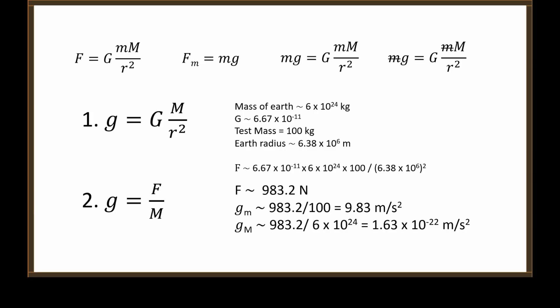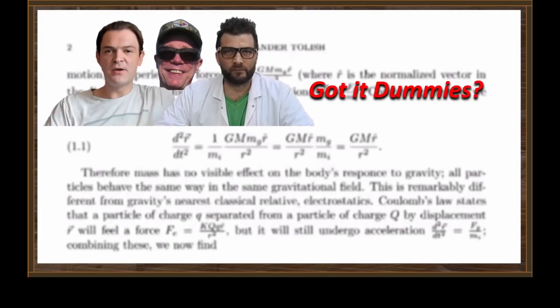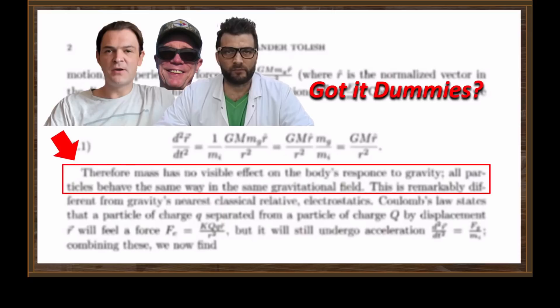Now think about this: if the test mass had been 100,000 kilograms instead of 100 kilograms, the force would have been 983,000 Newtons. But when we compute the acceleration, we divide 983,000 by 100,000, and we still end up with exactly 9.83 meters per second squared. Got it, dummies? Don't be so quick to declare victory until you understand what the argument is. This is not an argument — this is simply a restatement of demonstrable fact.